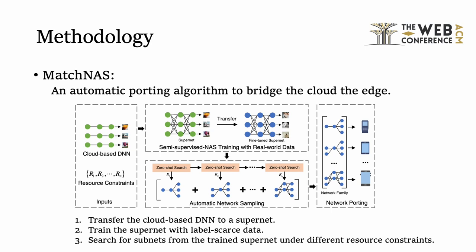Therefore, to address the above-mentioned challenges at once, we propose MatchNet, an automatic pruning algorithm to bridge the cloud AI and the edge AI. We first transfer the pre-trained cloud-based model as a supernet, then train the supernet with label-scarce data, and finally search for subnets under different resource constraints from the supernet.